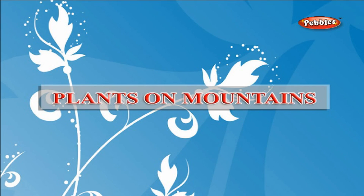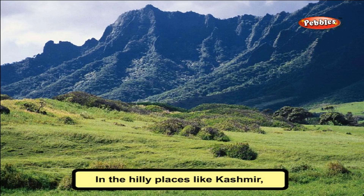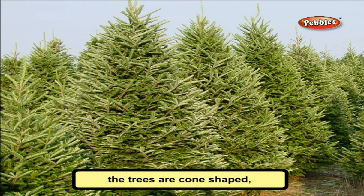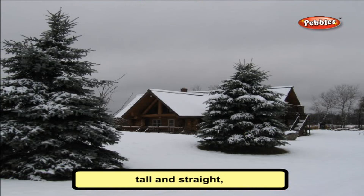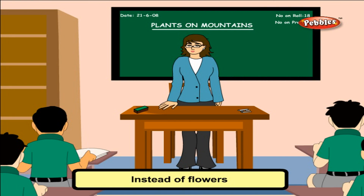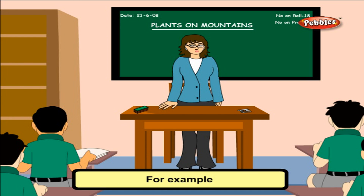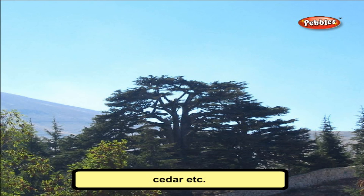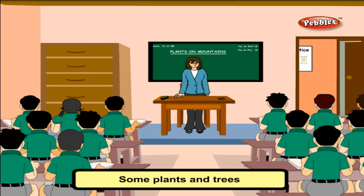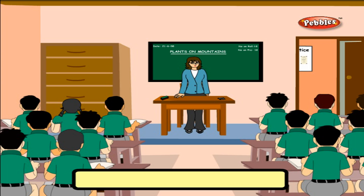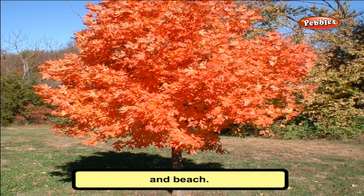Plants on Mountains: In hilly places like Kashmir, Ooty and Darjeeling, the trees are cone-shaped, tall and straight so that the snow can easily slide off. Instead of flowers, they have cones with seeds inside them. The leaves are needle-like with tough and waxy coating to survive the snow and cold. For example, pine, fir, cedar, etc. Some plants and trees shed their leaves in winter to protect themselves from cold, for example oak, maple and peach.